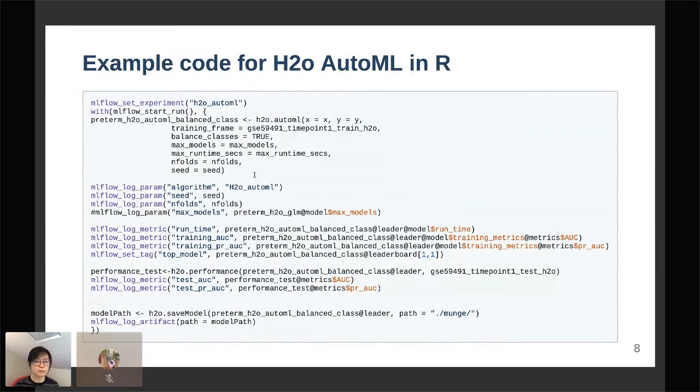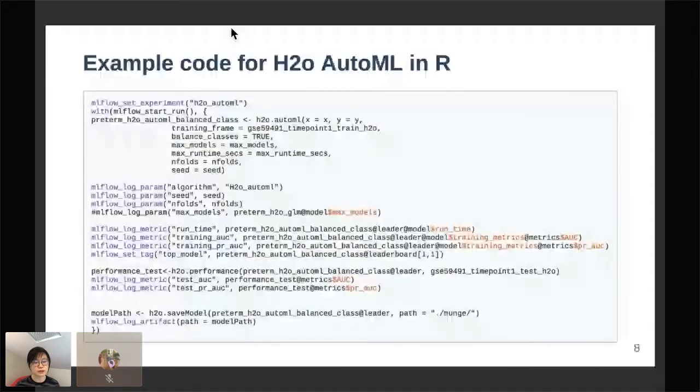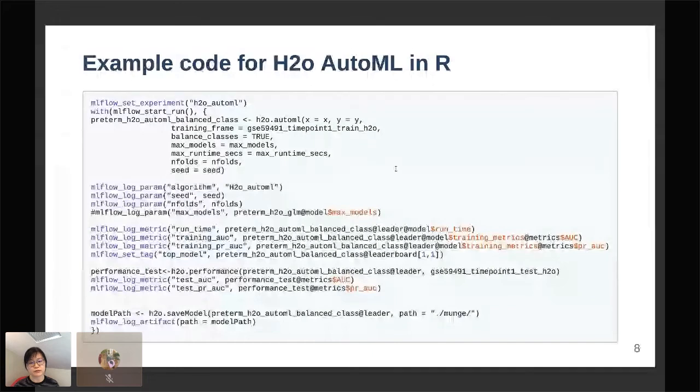I run this and then I log all the parameters that I use, so the algorithm is H2O AutoML and the folds for cross validation. I also keep track of the top model metrics. Here I'm keeping track of the training AUC and training precision-recall AUC. I also track the top model and I keep track of the performance on the test set. Lastly, I save the model and log the artifact.